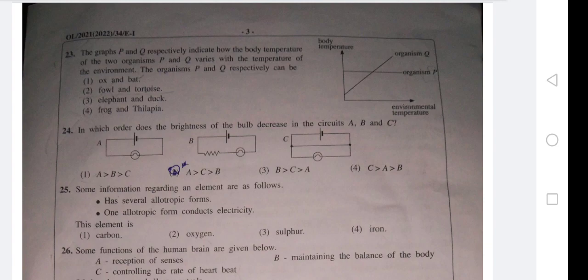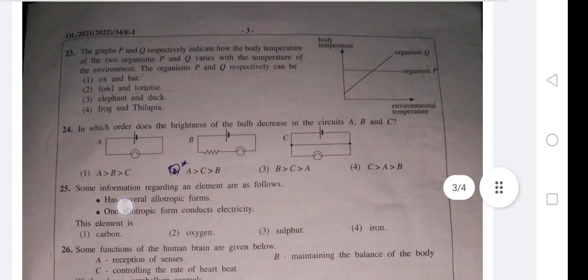Organism Q, when the temperature is changing, it is a cold-blooded animal. So it can't be duck, it can't be bat. It can be either tortoise or tilapia. Now jungle fowl belongs to P. Tortoise is a cold-blooded animal. So the second one is the suitable answer.